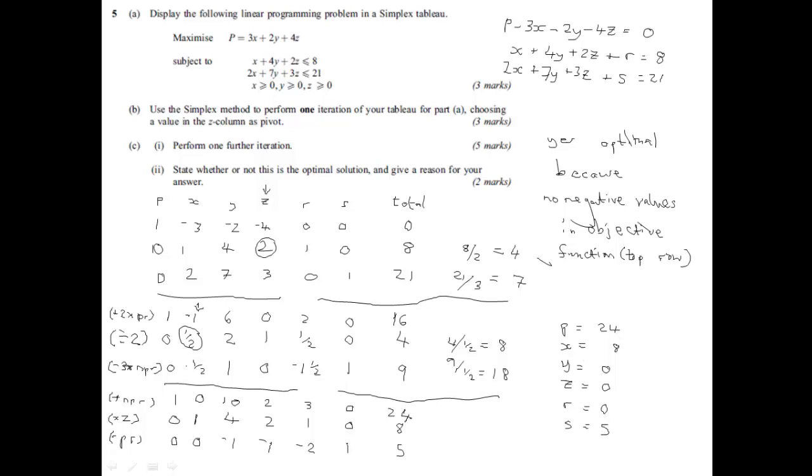And if we put those values back into our initial equations, we can see why it works. Well, P equals 3x plus 2y plus 4z, 3 times 8, 2 times 0, 4 times 0, so that gives us a 24, the value of P. Here, we can see that if x is 8, y is 0, z is 0, that is why r is 0, because r isn't required there, because x is 8. And here, we've got 2 times 8, 16, but that leaves us short. It leaves us short by 5, which is why s is 5.